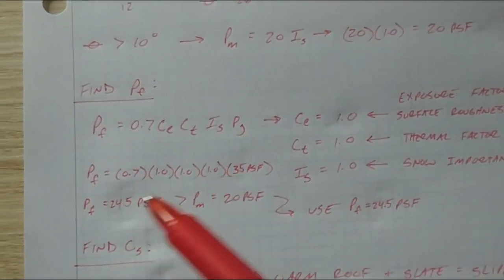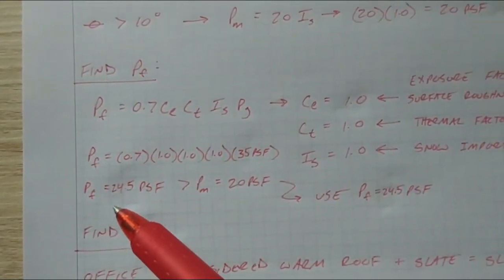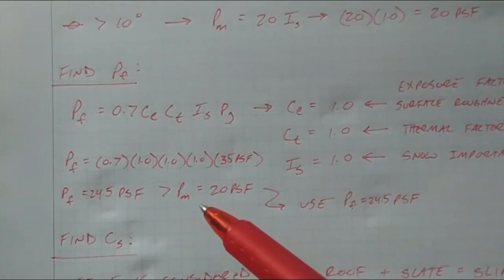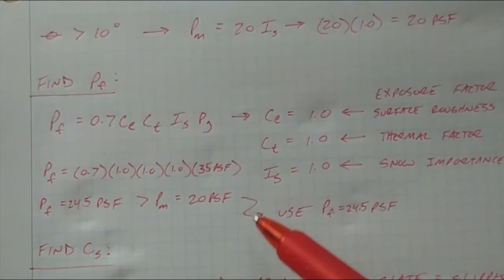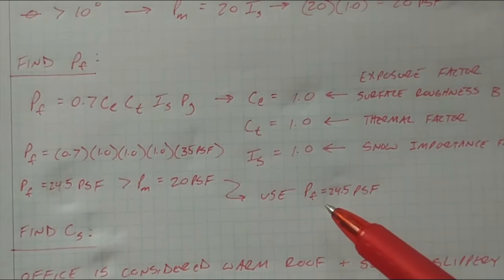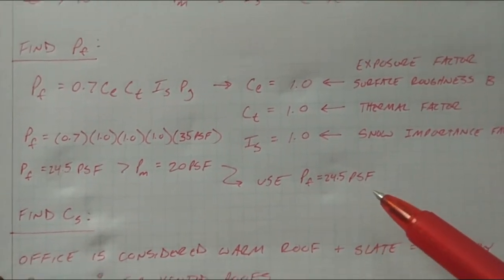We plug all that in, that gets you a flat roof snow load of 24.5 PSF, which is greater than your P minimum of 20 PSF. So we're going to use the flat roof snow load, 24.5 PSF.